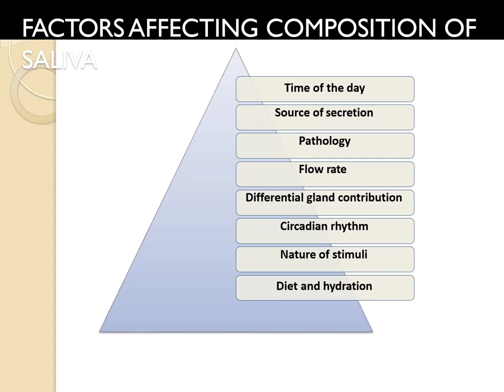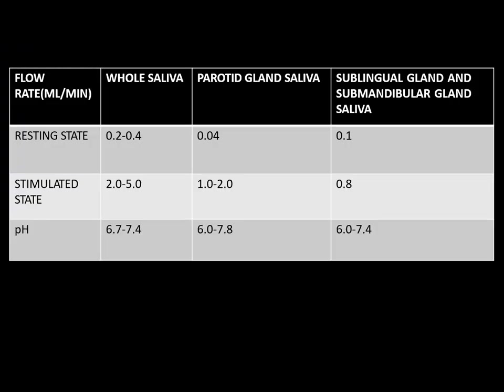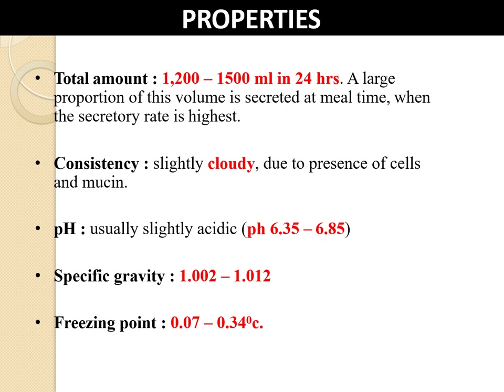Regarding the composition of saliva: the resting flow rate for whole saliva is 0.2 to 0.4 ml per minute; for the parotid gland 0.04 ml/min; sublingual and submandibular 0.1 ml/min. In the stimulated state, whole saliva production increases to 2 to 5 ml/min. The pH ranges from 6.7 to 7.4 for whole saliva, 6 to 7.8 for the parotid gland, and 6 to 7.4 for sublingual and submandibular. Total amount is 1200 to 1500 ml in 24 hours, pH usually 6.35 to 6.85, specific gravity and freezing point of 0.07 to 0.34 degrees centigrade.